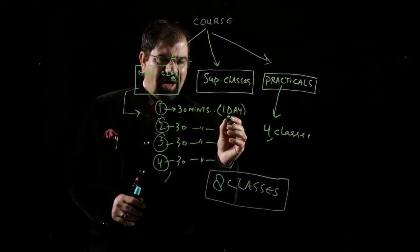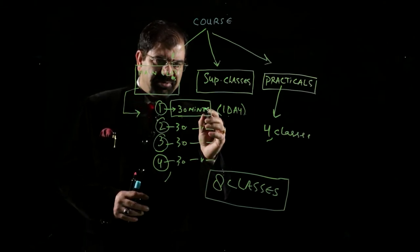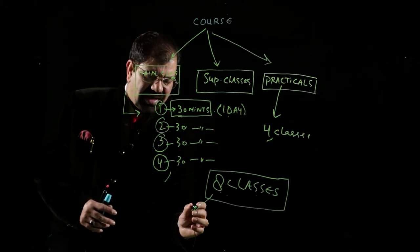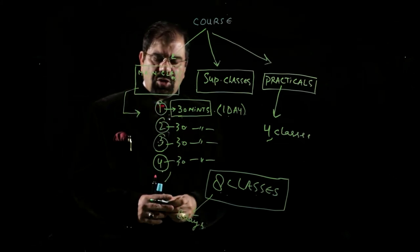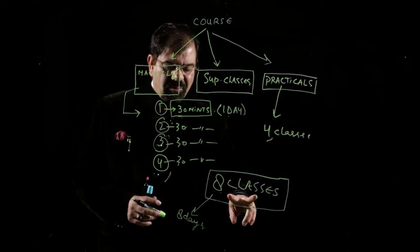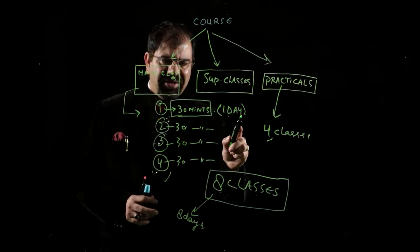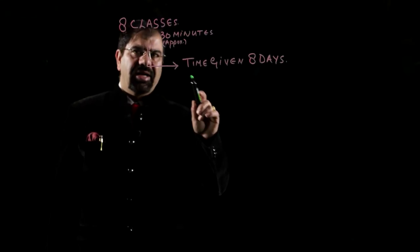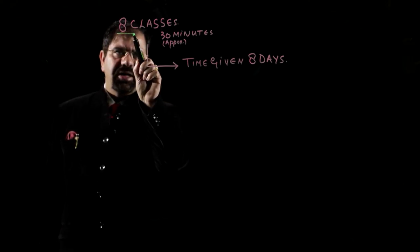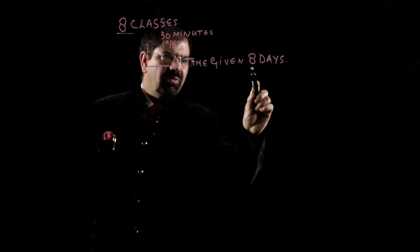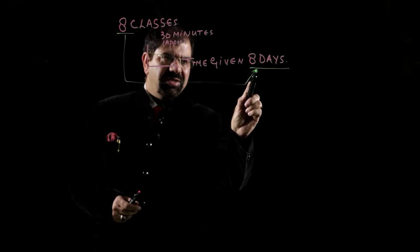You will get complete one day to watch this 30-minute class video. If the course has eight classes, you will get eight days. We are calculating it this way: how many classes there are, we give you that number of days. For eight classes, you are getting complete eight days of watch time.